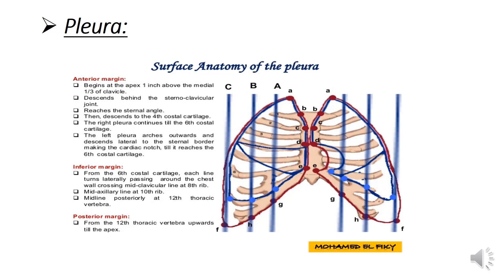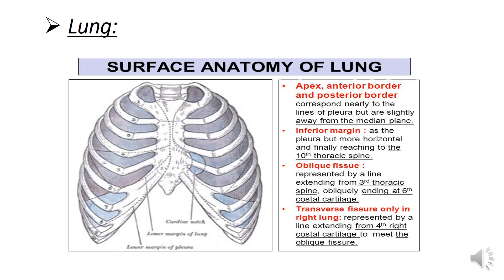The surface anatomy of the apex and the anterior border of the lung corresponds nearly to that of the pleura. The apex of the lung is represented by a dome one inch above the medial third of the clavicle. The anterior border of the right lung corresponds to the anterior border of the pleura. The anterior border of the left lung has the same markings as the right lung down to the fourth costal cartilage, where its cardiac notch passes laterally for about three and a half centimeters from the left margin of the sternum until it reaches the left sixth costal cartilage.